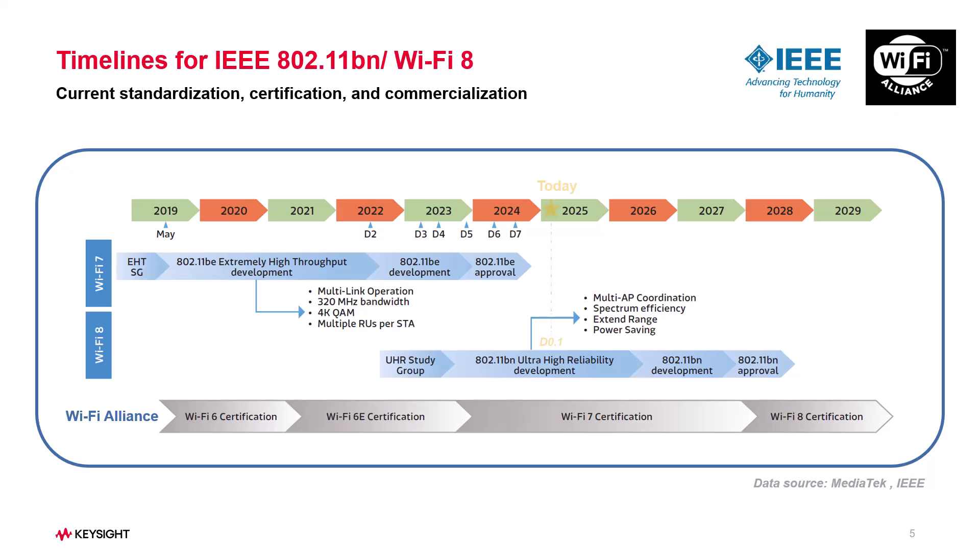The IEEE 802.11BN standard is expected to be finalized by 2028, but we'll probably see early devices by late 2027, just like Wi-Fi 7.